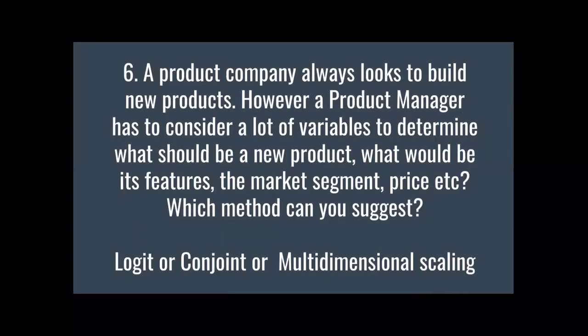Question 6: A product-based company always looks to build new products. However, a product manager has to consider a lot of variables to determine what a new product should be — what would be its features, the market segment, what would be the price of that product, and many other variables. So which method can you suggest: logit, conjoint, or multidimensional scaling?